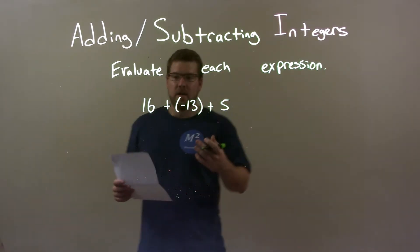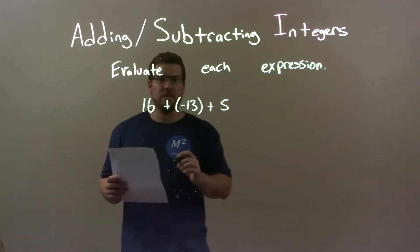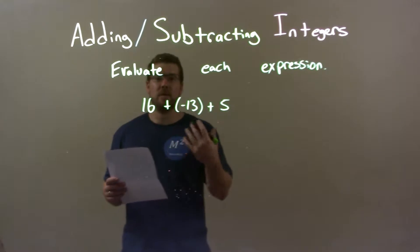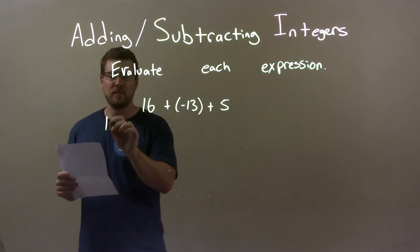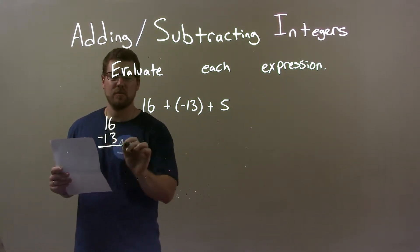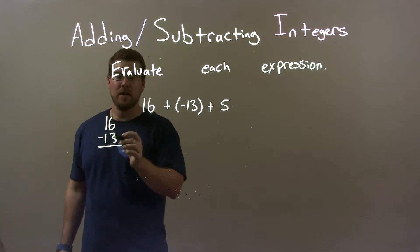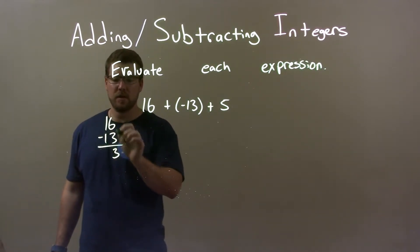Well, first thing here, I see 16 plus a negative 13. Now, adding a negative is the same thing as subtraction. So I can do that 16 minus a 13 right here. Well, 16 minus 13 just comes out to be a 3, right? A 3 subtracted from 6 gives me a 3. 1, 1, 0.